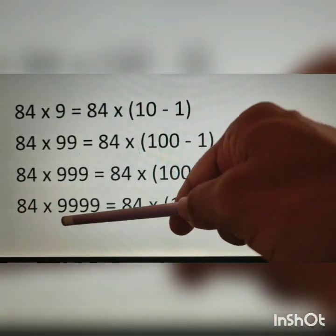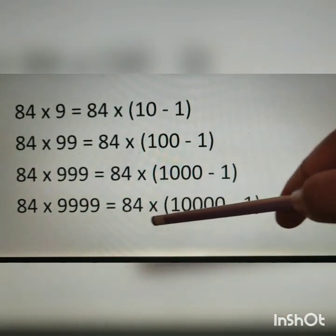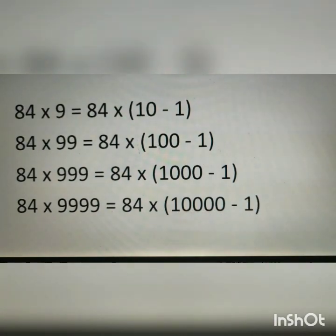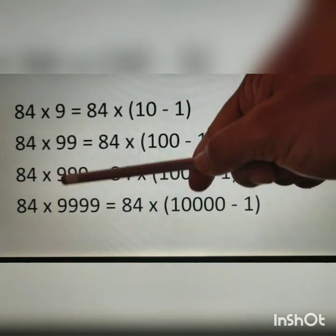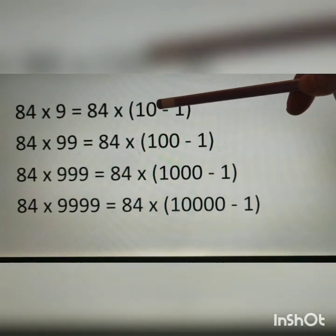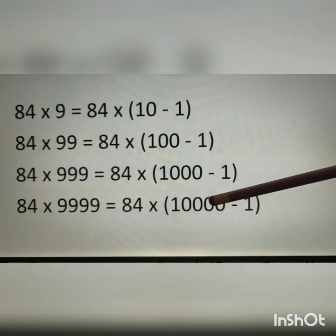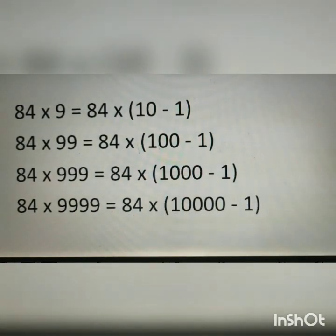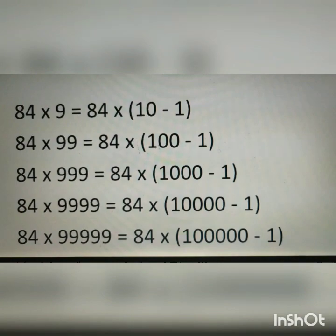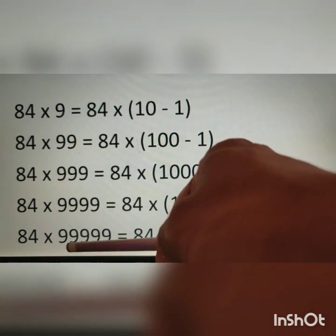So 84 multiplied by 9999 is equal to 84 times 10,000 minus 1. Following the pattern, the next line will have five 9s and five 0s. Therefore 84 multiplied by 99999 is equal to 84 times 100,000 minus 1.